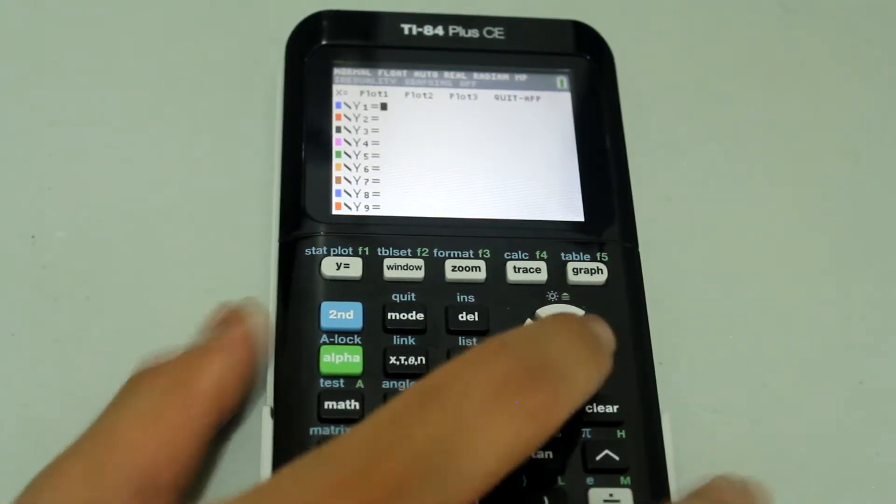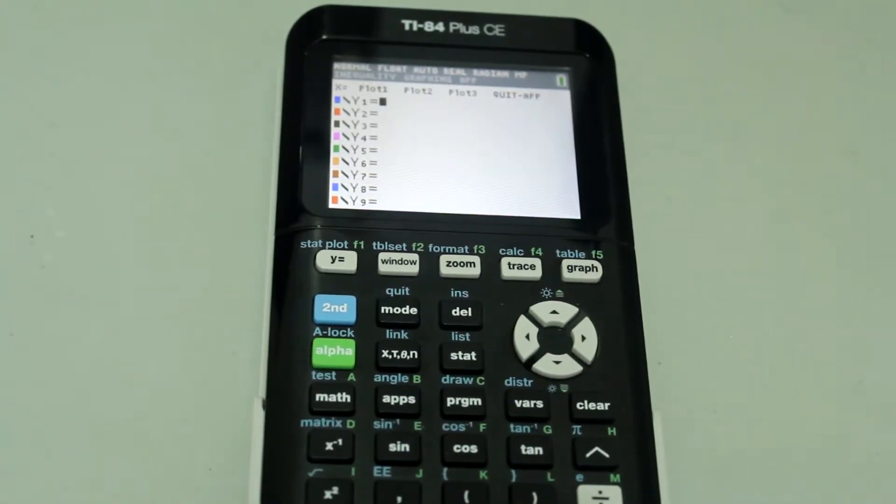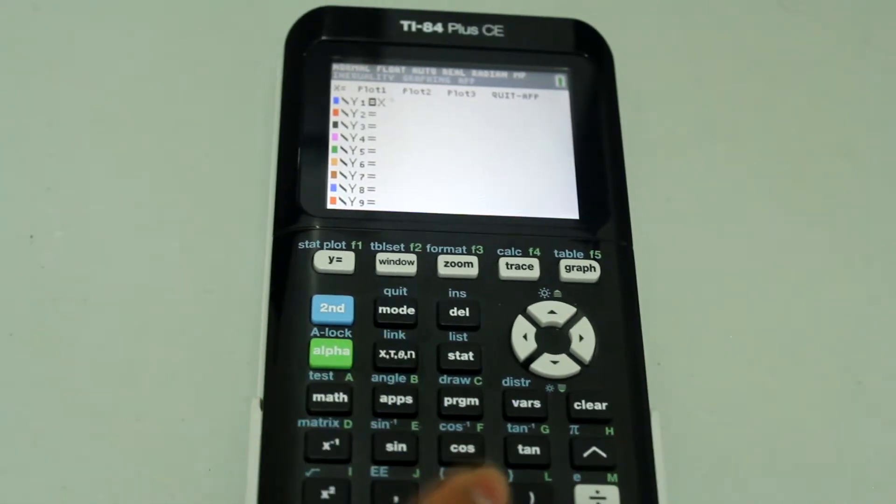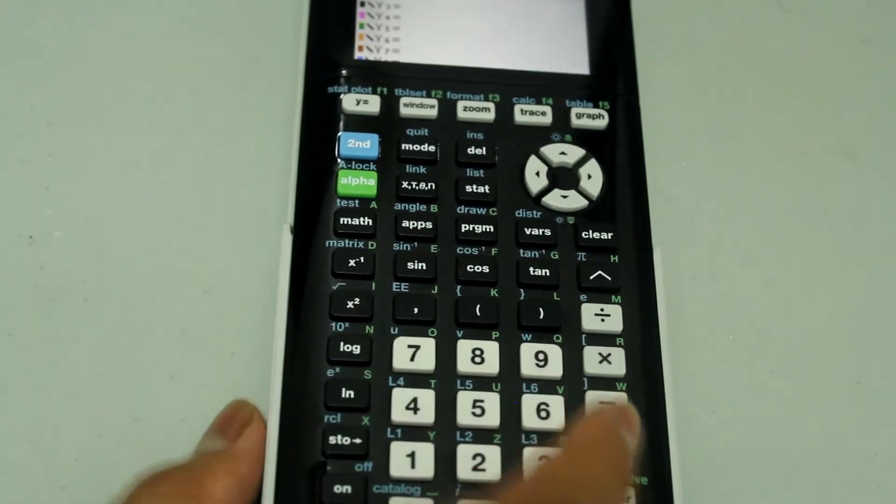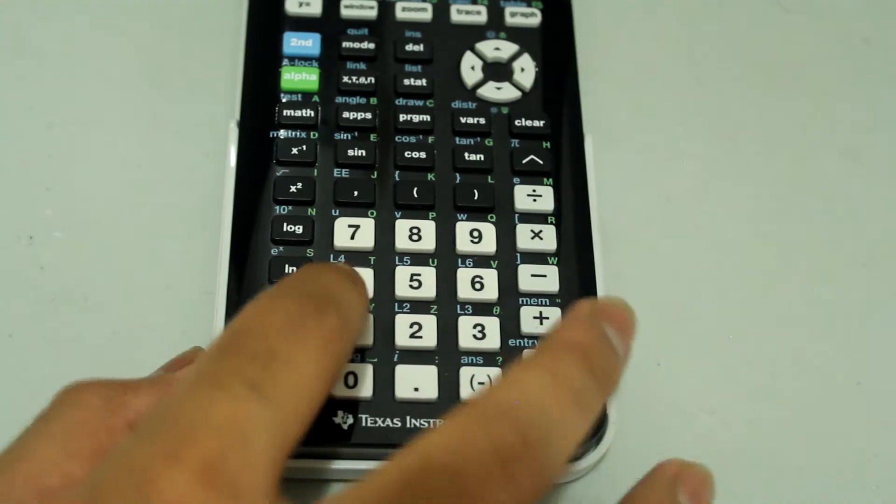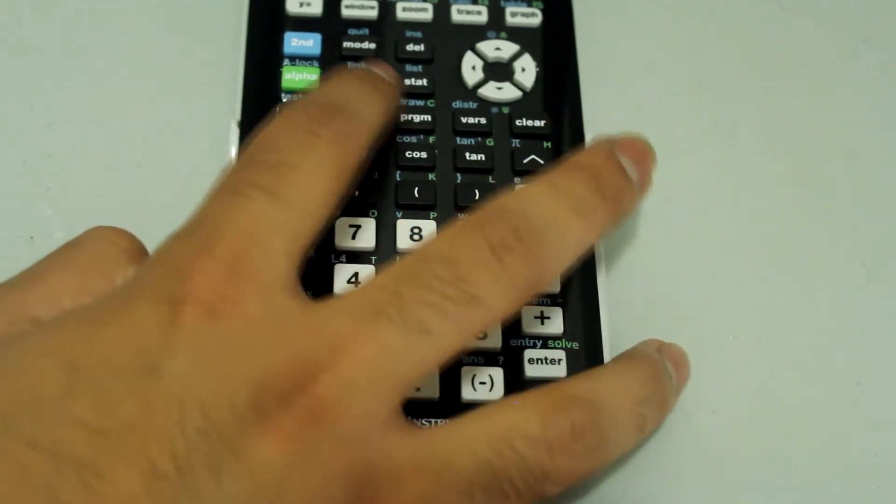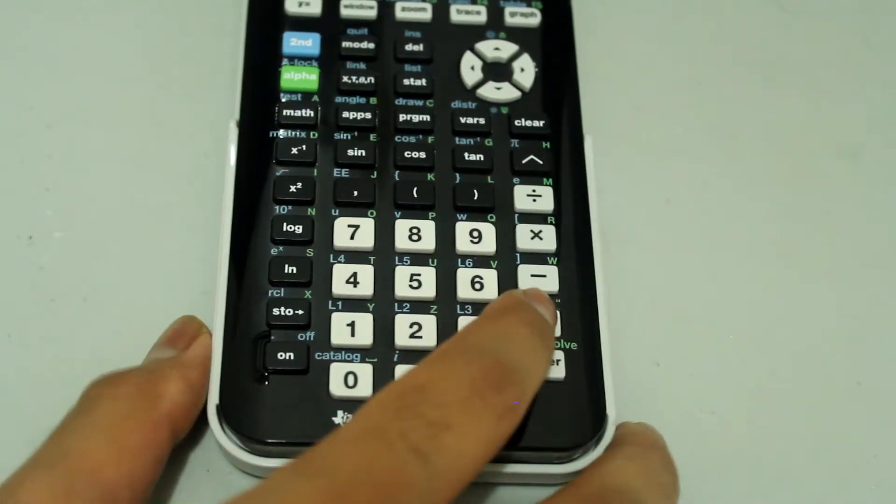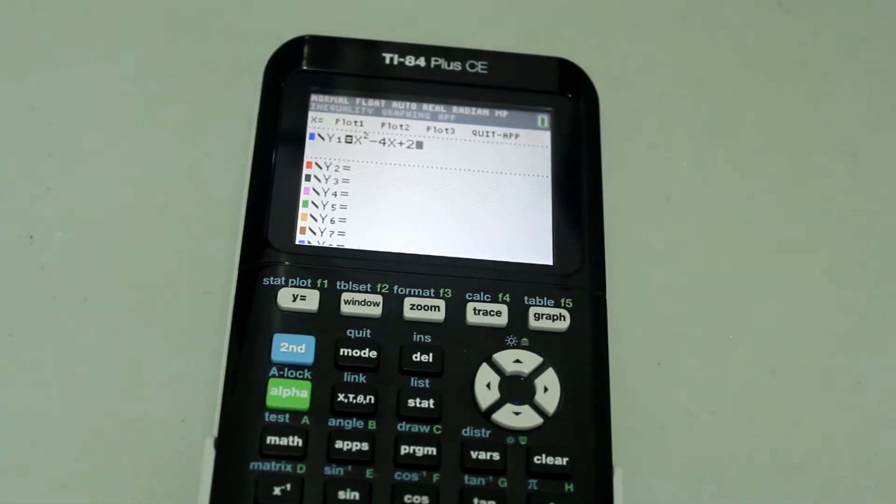So first, let's go ahead and enter the functions. Y1 is equal to x² - 4x + 2.